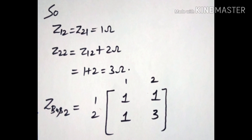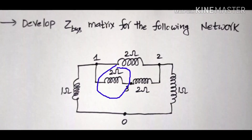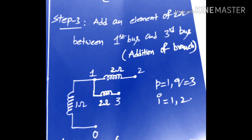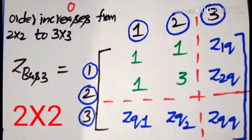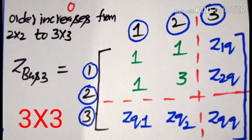Now we are adding the third element between the first bus and the third bus, treating it as a branch. The node from which the element is added is the first node (P=1) and the node to which it is added is the third node (Q=3). The i value depends on the number of buses in the previous partial network, which had two buses, so i goes from 1 to 2. With this branch addition, the order increases from 2×2 to 3×3, and we compute the off-diagonal elements Z_1Q, Z_2Q and diagonal element Z_3Q.